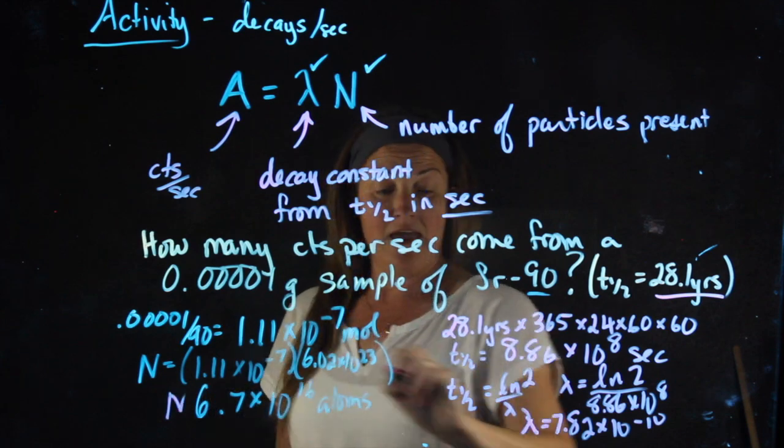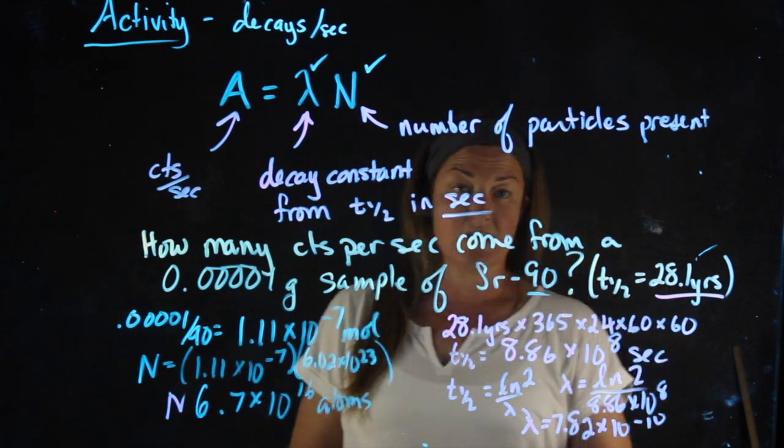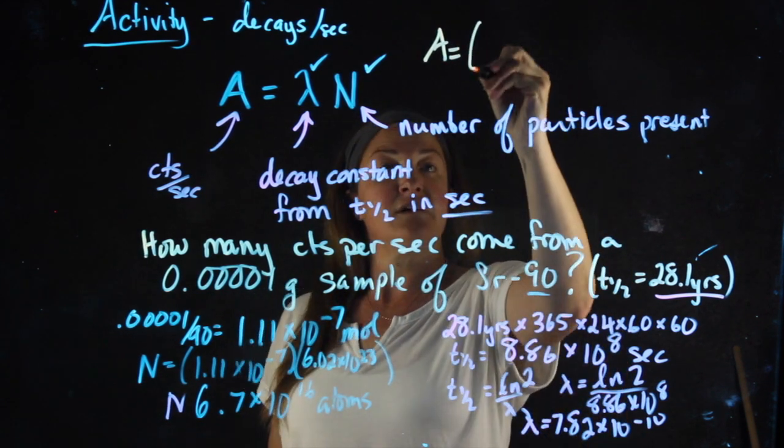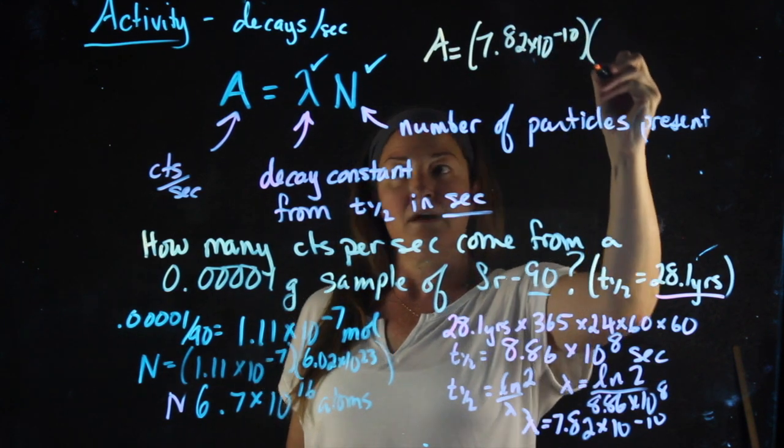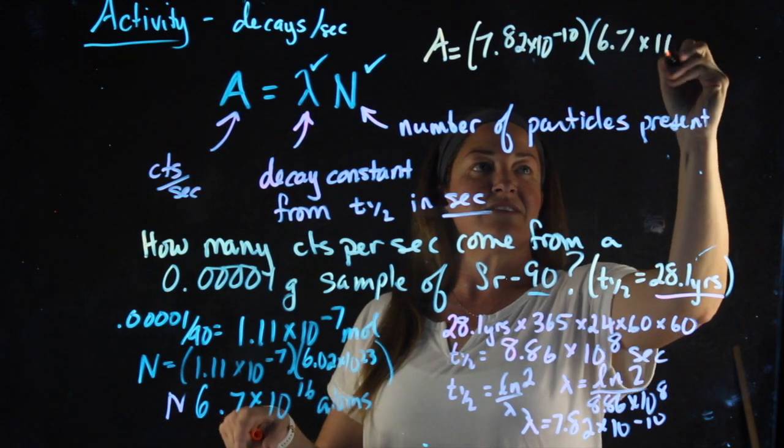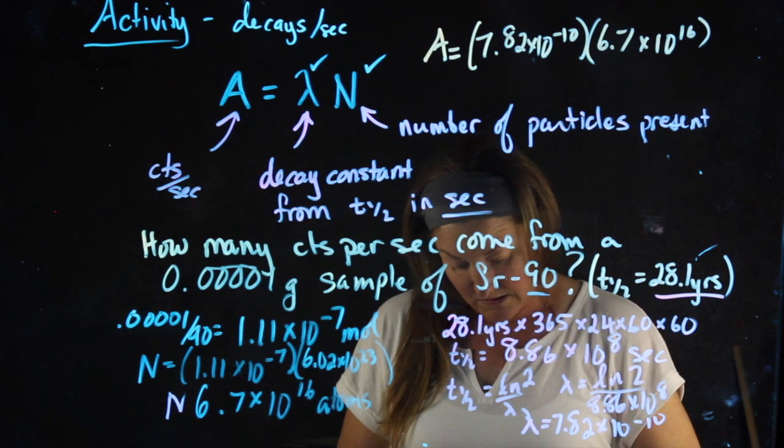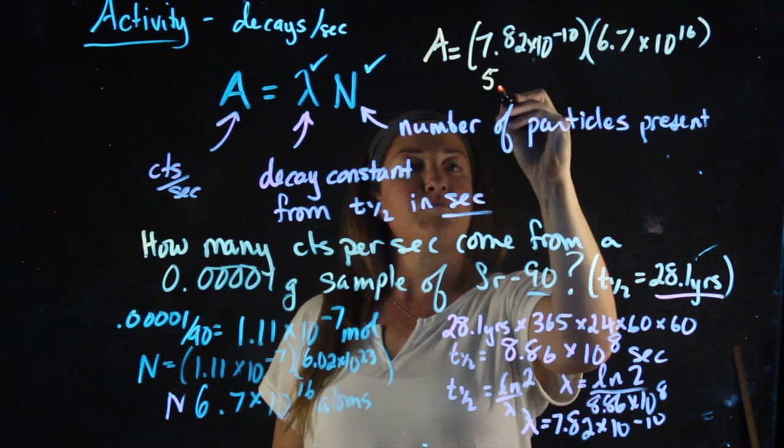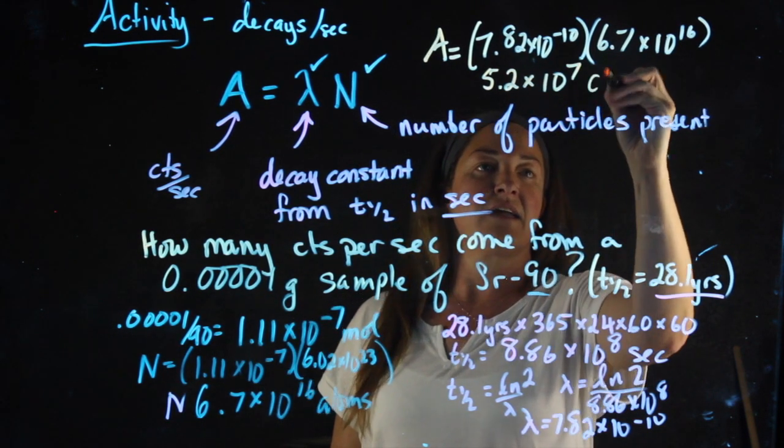Okay, now I have N and I have lambda so I can solve for the activity. I'm going to move back up to the top so you guys can see it. A equals 7.82 times 10 to the negative tenth times the number of atoms 6.7 times 10 to the 16th gives me 5.2 times 10 to the seventh counts per second or 52 million decays per second.